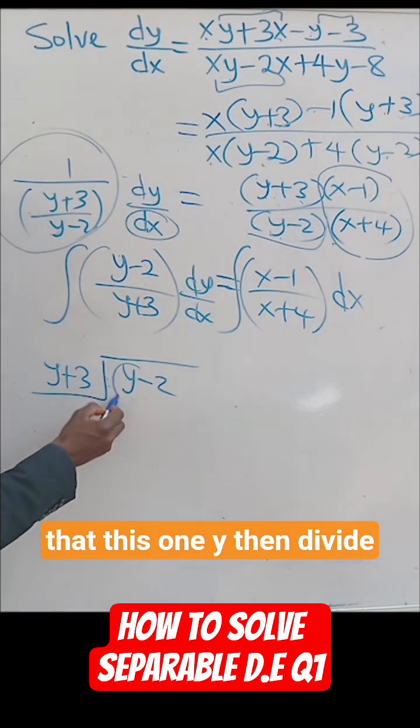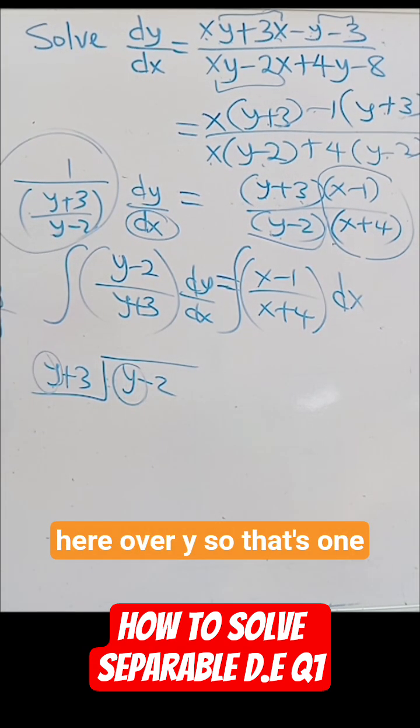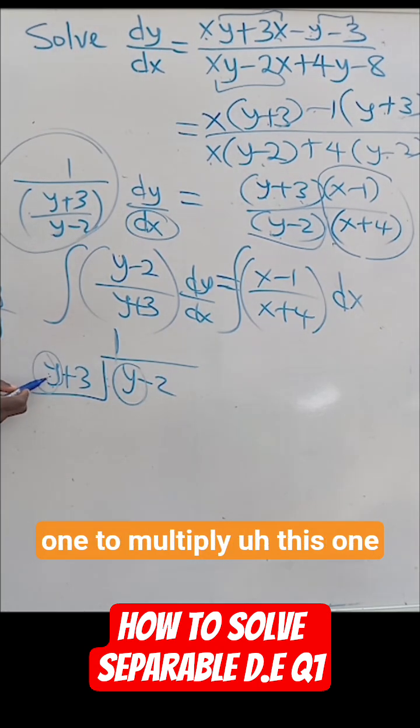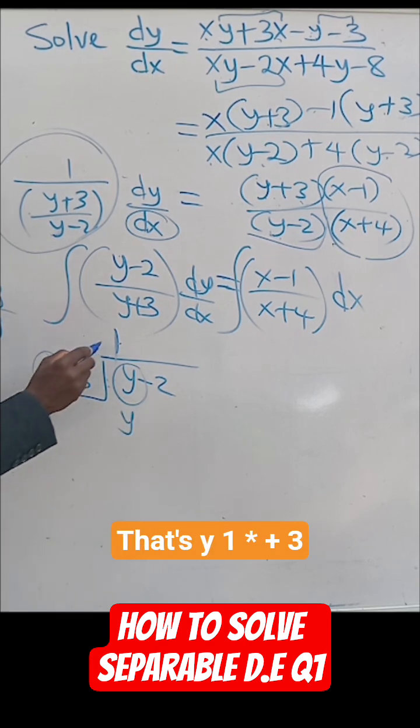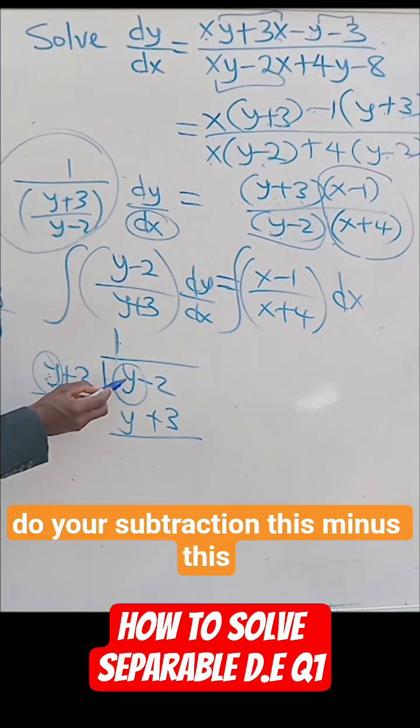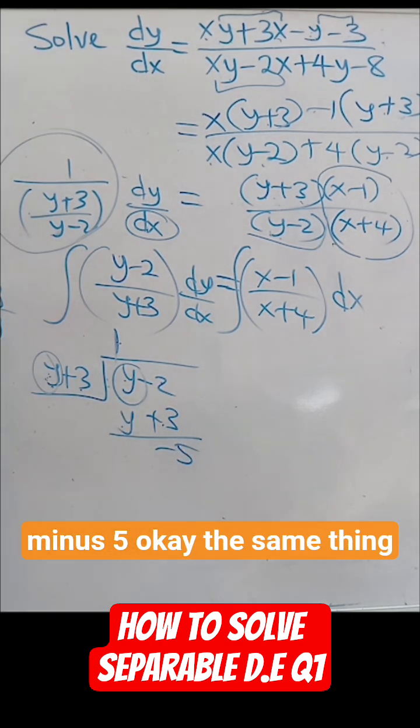So what we're going to do is take this one, y, then divide by the first one here over y, so that's 1. We're going to use the 1 to multiply this one, and that will be 1 times y, that's y, 1 times plus 3, that's plus 3. Then you do your subtraction: this minus this, this one minus this one gives minus 5.